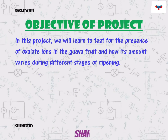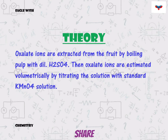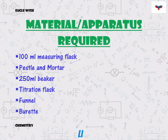Firstly we will write the objective of the project. After that we will introduce the topic of our project in brief. We will also mention a brief theory about our project. After that we will write about the material or apparatus required in our project.